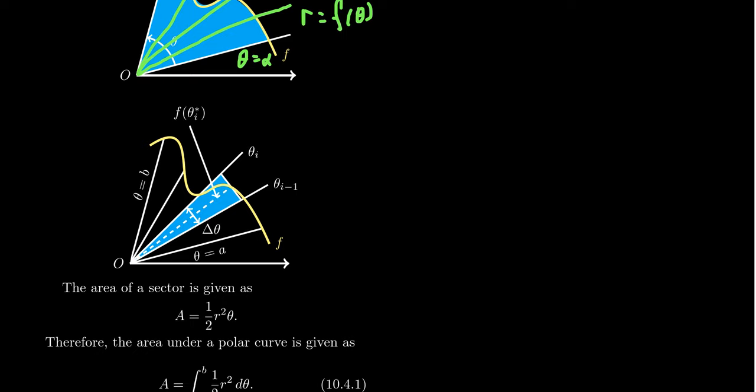We subdivide the interval from alpha to beta into n subdivisions, n slices. We want each slice to be equidistant, so we calculate delta theta. This is going to be beta minus alpha over n, exactly like we've seen before. We want these to be equal slices.